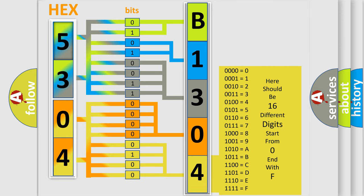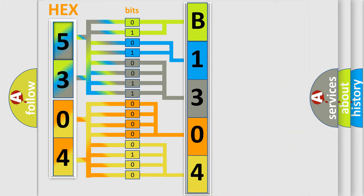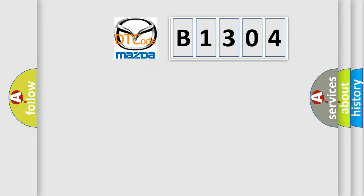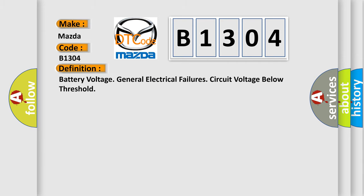We now know in what way the diagnostic tool translates the received information into a more comprehensible format. The number itself does not make sense to us if we cannot assign information about what it actually expresses. So, what does the diagnostic trouble code B1304 interpret specifically for Mazda car manufacturers?